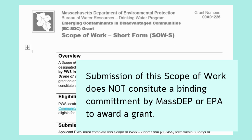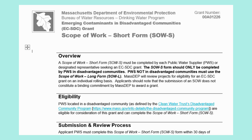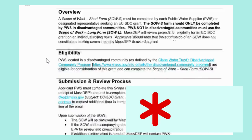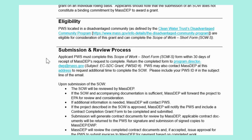Applicants should note that the submission of this Scope of Work does not constitute a binding commitment by MassDEP or the EPA to award a grant. Please review the overview, eligibility, and submission and review process sections before completing this form. When completing this form, be aware that all required fields, marked with a red asterisk, must be completed.